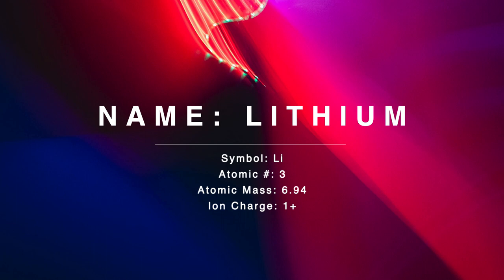Lithium's symbol is Li. Its atomic number is 3, which is the number of protons and electrons it has. Protons are positively charged particles, and electrons are negatively charged particles. Protons are in the nucleus, which is the center of an atom, and electrons circle around the nucleus. Lithium's atomic mass is 6.94, which is the total number of protons and neutrons in its nucleus. Neutrons are neutrally charged particles.